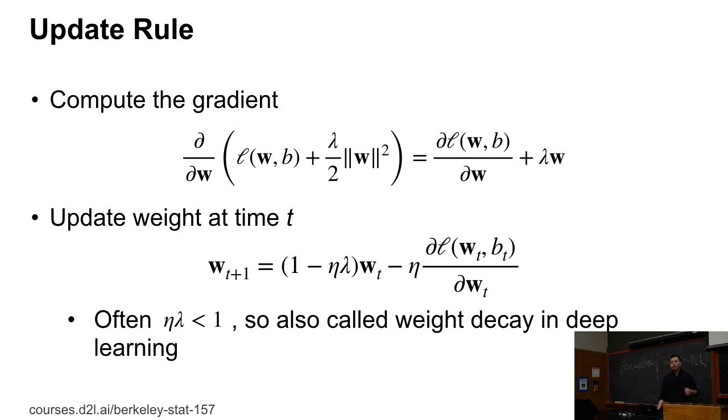So people in the neural network community call this weight decay. Actually, it's just the L2 regularization we have.